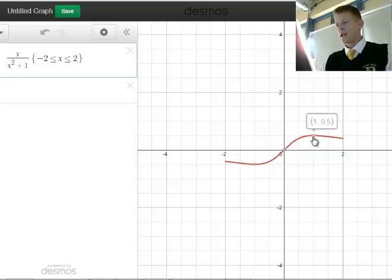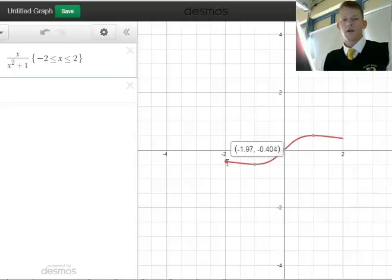As you can see here, here's my max value at (1, 1/2), and here's the endpoint value at (2, 0.4). Pretty slick, and over here you can see my min value and my other endpoint value.